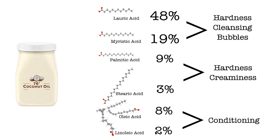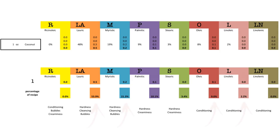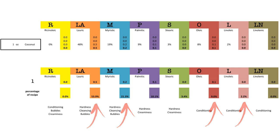Now let's use coconut oil as an example. Coconut oil is made up in large part of 48% lauric acid, 19% myristic acid, 9% palmitic acid, 3% stearic acid, 8% oleic acid, and 2% linoleic acid. Now we seem to be getting somewhere — we have both the hardness and the cleansing we were looking for. It should be perfect, but it's not. By looking at our chart for coconut oil, we can see that nearly 75% of our recipe is just hardness, cleansing, and bubbly. Sure, we have a little bit of creaminess, but a small percentage of conditioning properties. That's the nature of a pure coconut oil soap — hard as a rock and ultra-cleansing, so much so that it can clean away the natural layer of oils on our skin.